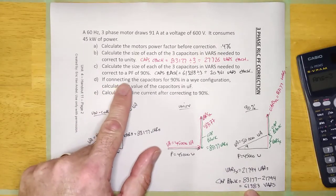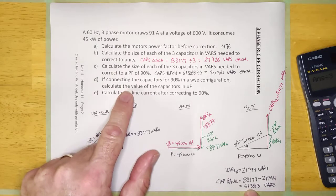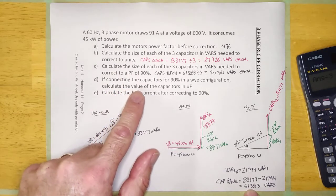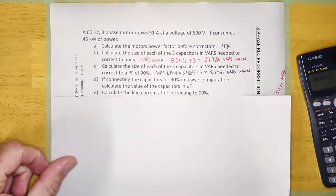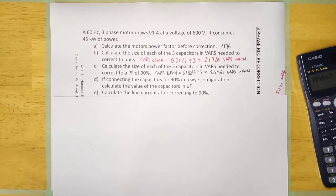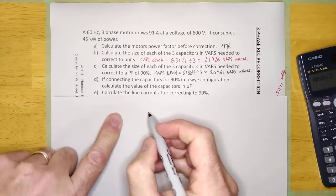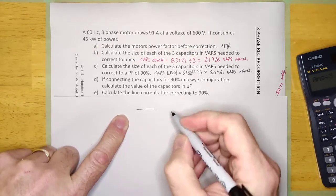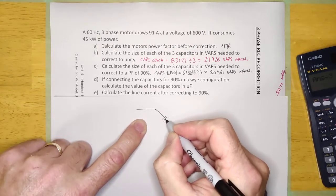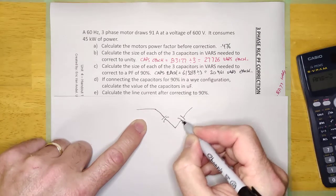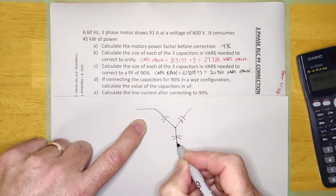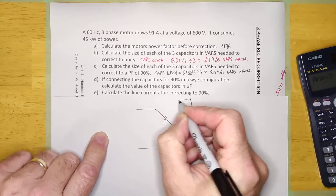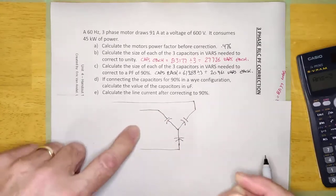We just figured out the size of the capacitors that we would need to correct this thing. And here, look at this. If connecting the capacitors for 90% in a Y configuration, calculate the value of the capacitors in microfarads. Well, let's take a look at that one for a second. I'm running out of room here, so I'm going to get another piece of paper out here. We've got some sort of three-phase motor here, and it looks like it's telling us that we are connecting our capacitor bank that we just calculated to correct to 90% like this in Y. And so, it's in parallel with whatever load that is out here.